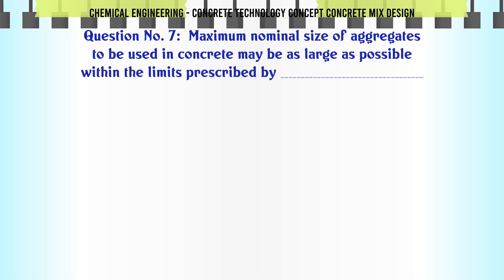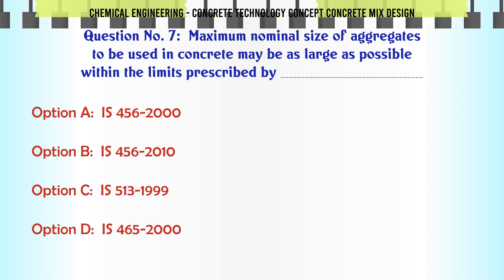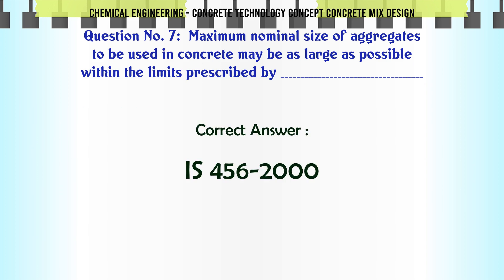Maximum nominal size of aggregates to be used in concrete may be as large as possible within the limits prescribed by: A: IS 456-2000, B: IS 456-2010, C: IS 513-1999, D: IS 465-2000. The correct answer is IS 456-2000.